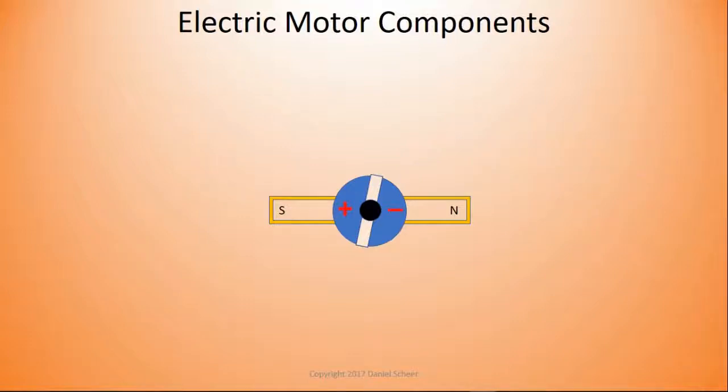The armature consists of a copper wire that will carry a current of electricity in a circle out one side and back into the other side of the commutator. Notice the north and south indicators. These are here because when you pass an electrical current through a wire, you produce a magnetic field. So this armature component is essentially an electric magnet or electromagnet.